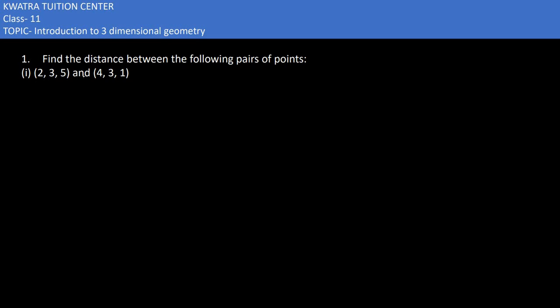Let's start with the next exercise. Here we have to find the distance between the following pairs of points. The first point is (2,3,5), then we have (4,3,1). So let's say my first coordinate is A.